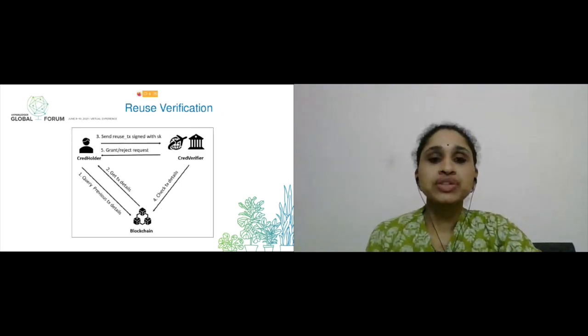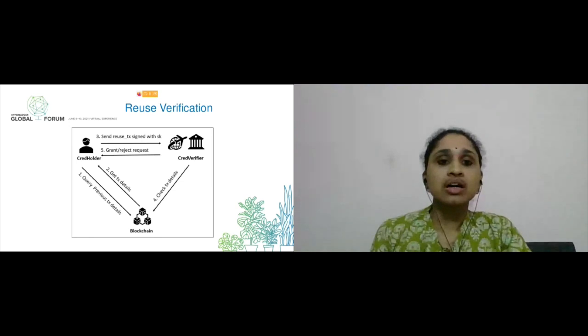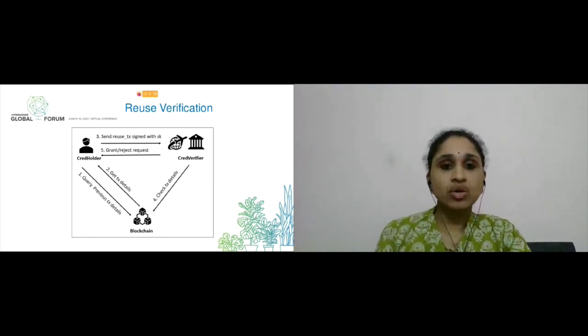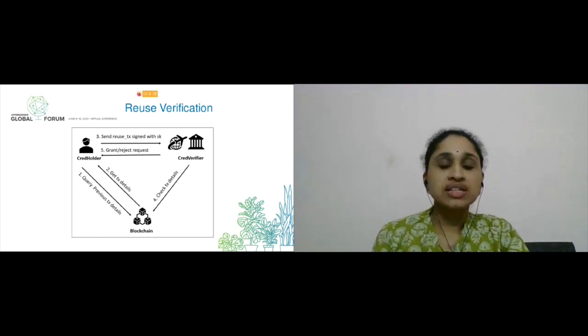Coming to the reuse transaction, the holder queries the previous authentication transaction from the blockchain. Holder gets the transaction details. Using these details, holder forms reuse transaction by appending the timestamp and signs it with a private key. Verifier then approves the transaction based on the validity of the reuse transaction.